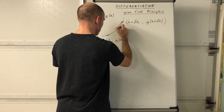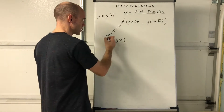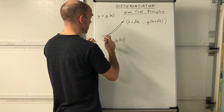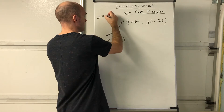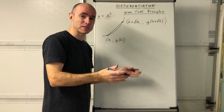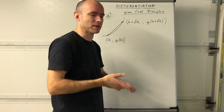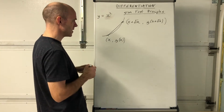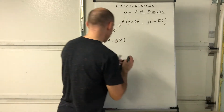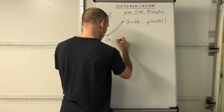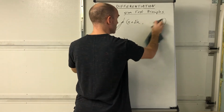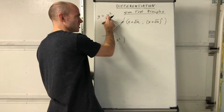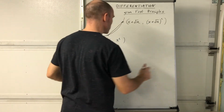We're finding the gradient of that chord, because that's going to be an approximation for the gradient of the tangent. Now suppose the function is y = x squared. We're going to apply this approach to any particular function - x squared, x cubed, you name it, even sine x or e to the x. So for y = x², our first coordinate is (x, x²) and our second point is (x + delta x, (x + delta x)²). We need to know the function so we can work out the y-coordinate.